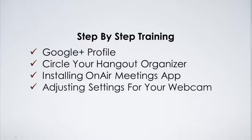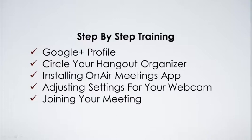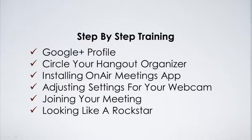And then we'll show you how to adjust your settings for your webcam. Just in case you have a few extra settings — sometimes computers do, sometimes there's two cameras, an external camera, an internal camera. We'll make sure you understand how to choose the right camera and the right sound quality for your Hangout. And then we'll teach you how to join a meeting. We'll do a quick mock meeting with you, and we want you to pause the training video so you can actually do exactly what we're showing you. Then we'll show you how to look like a rock star by giving you some tips and tricks to do the perfect Google Hangout.